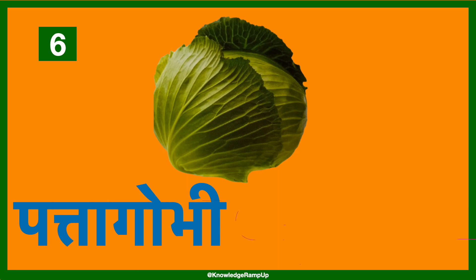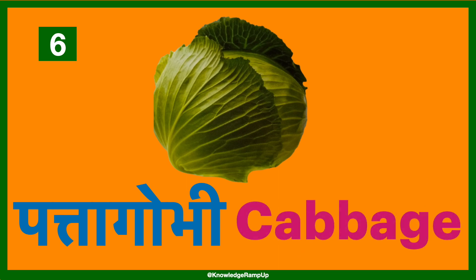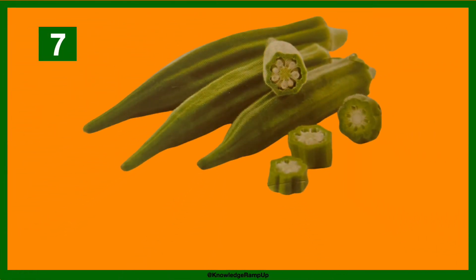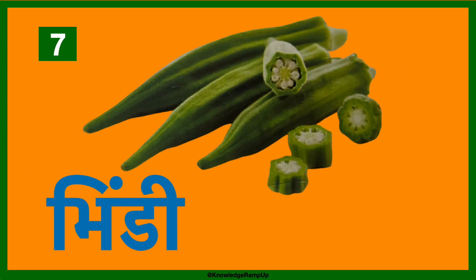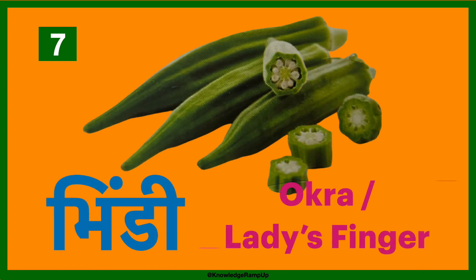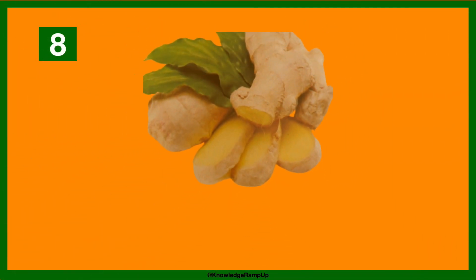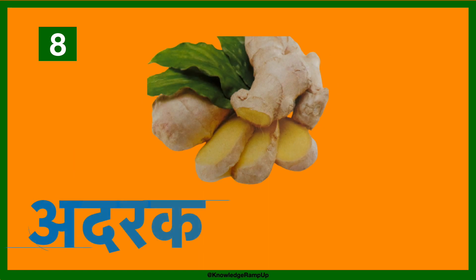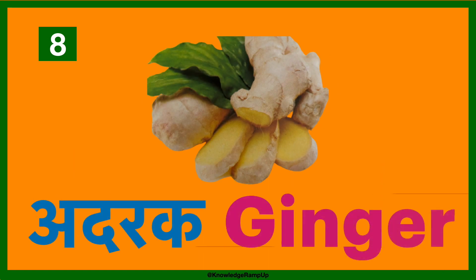Pata gobi — it's called cabbage in English. Bhindi has two names: okra and lady's finger in English. Adrak — ginger.